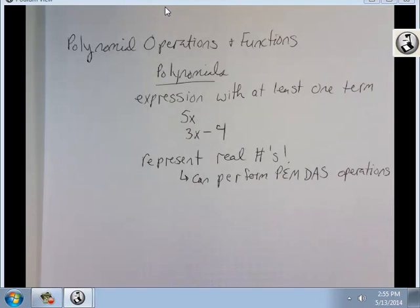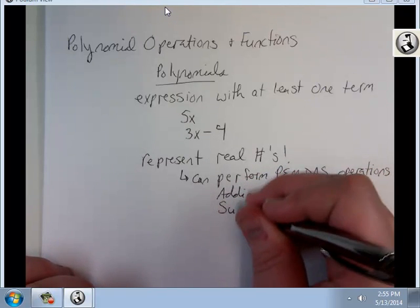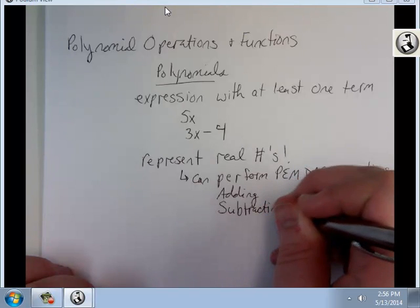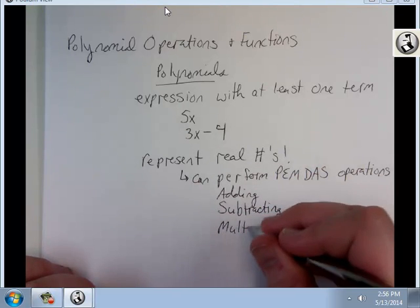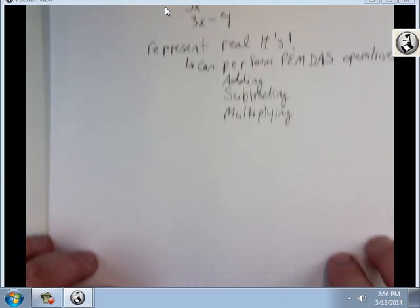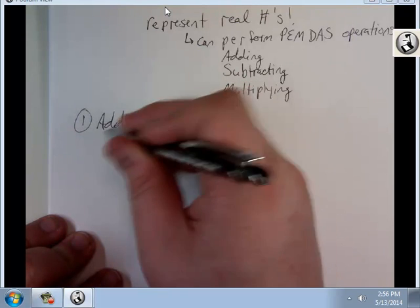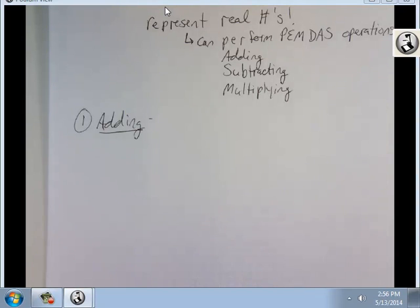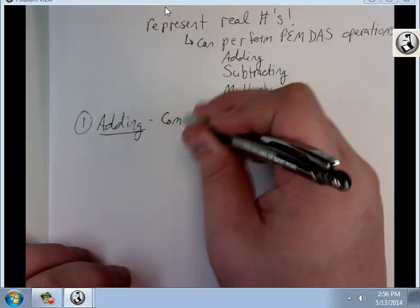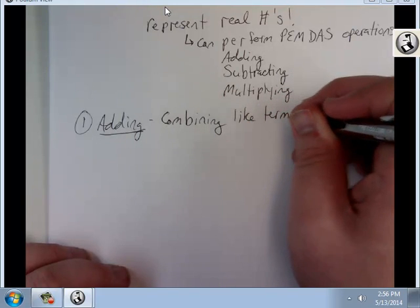We're going to focus on adding, subtracting, and multiplying for today. So we're going to start with adding. When you add polynomials together, all you're going to do is what's called combining like terms, which I'm going to abbreviate as CLT.